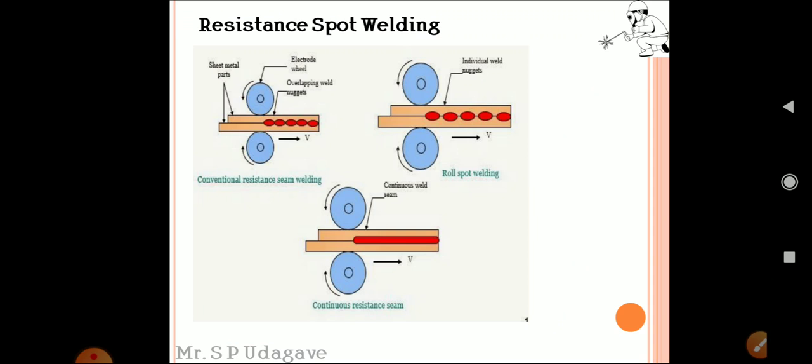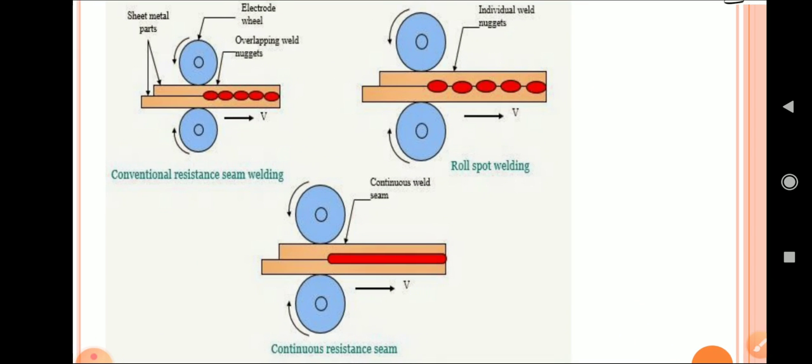Resistance seam welding is commonly classified into three types of weld: first is conventional seam weld, second is roll spot weld, and the last is continuous resistance seam weld.